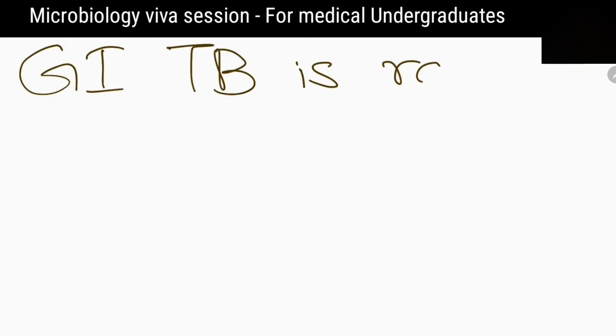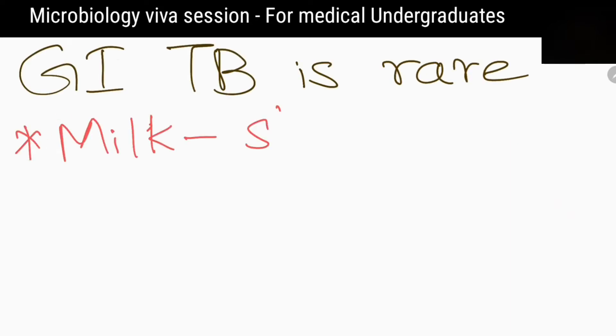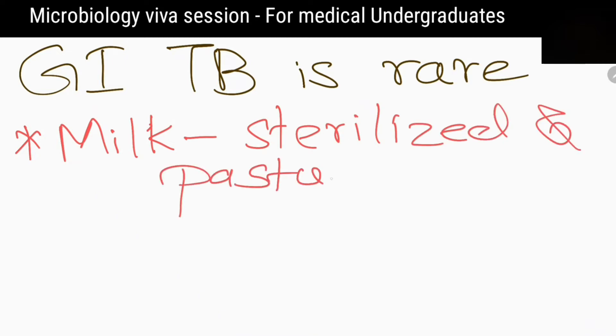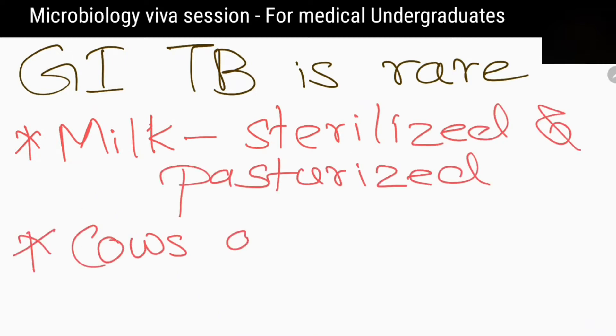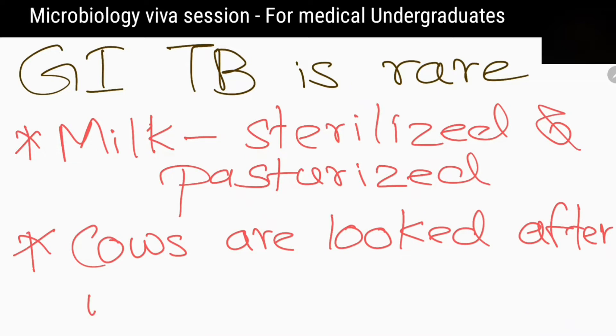Why is gastrointestinal tuberculosis rarely seen these days? Because cows are looked after well and milk is sterilized and pasteurized.